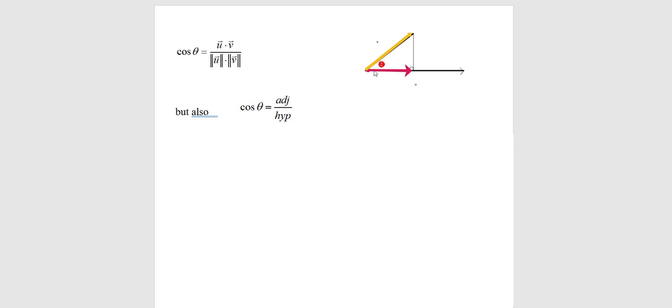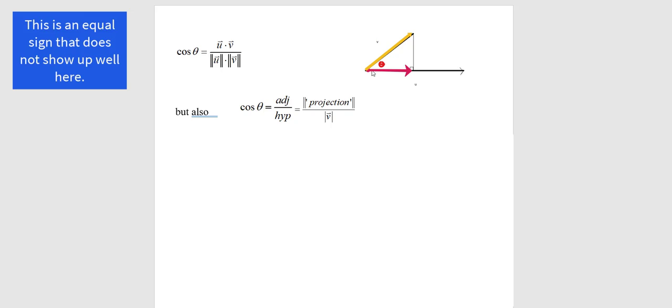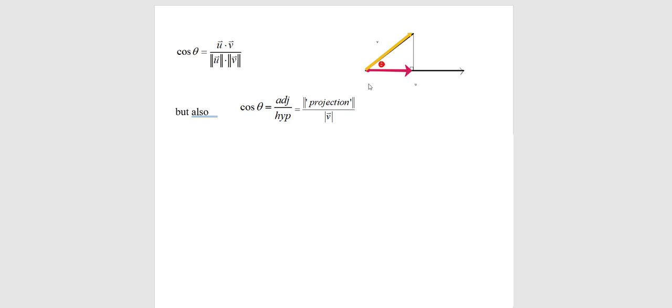Wait a second. This is my projection vector. That side right there is the magnitude of my projection. Wait where does this V come from? Slow down. Adjacent over hypotenuse. Right triangle trigonometry. Well that means that this here is equal to this here. So let me write that out.